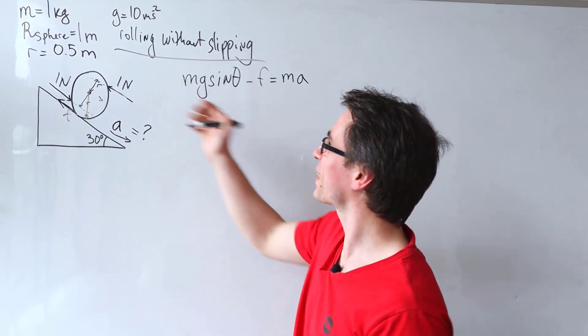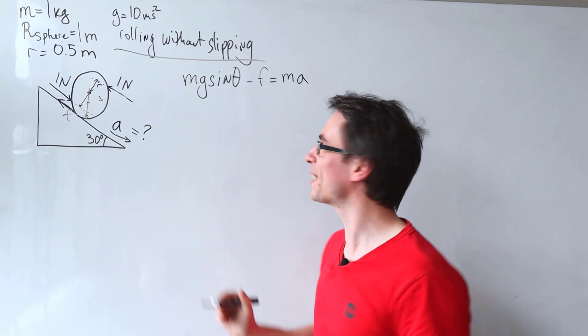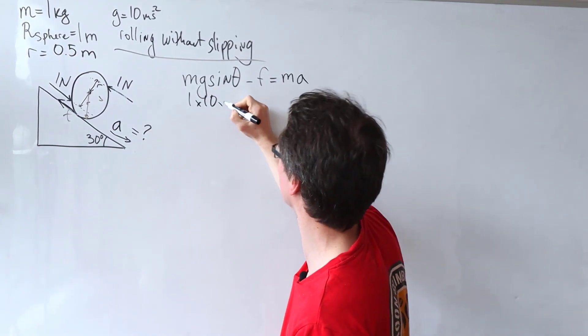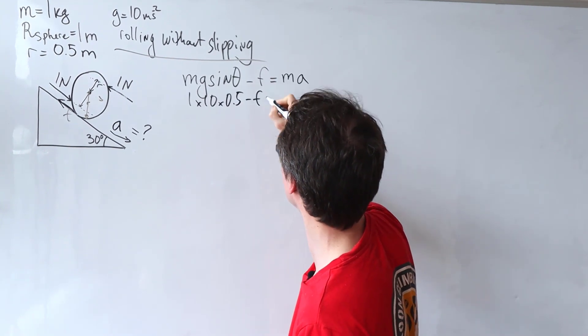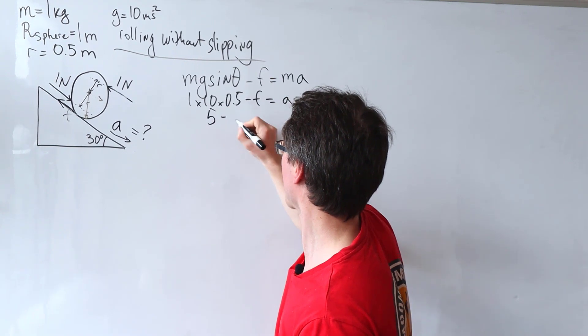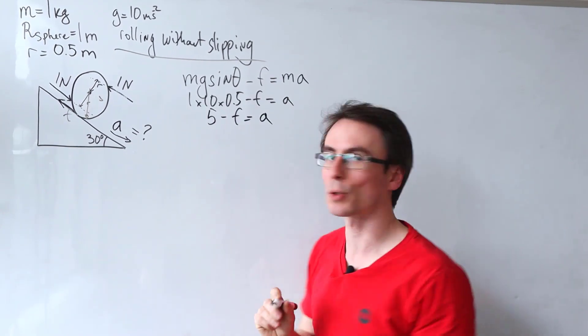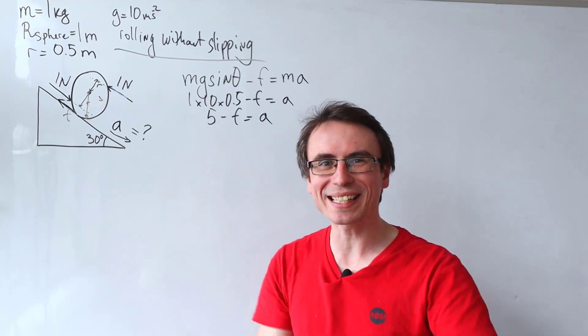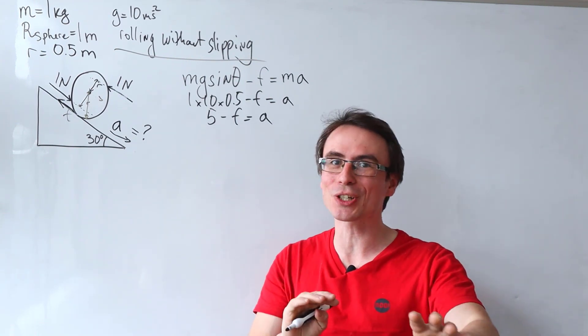Because the numbers here are so delightfully simple, we can just say that this is equal to 1 times 10 times sine of 30, which is just a half take away F will be given by the acceleration, i.e. 5 minus F is equal to A. We're done with the center of mass world. Now let's step into the rotational world.